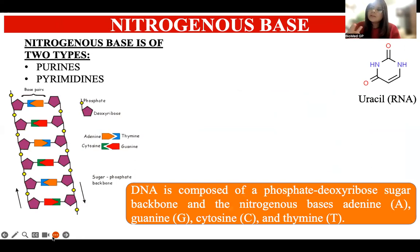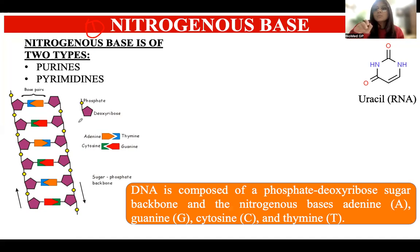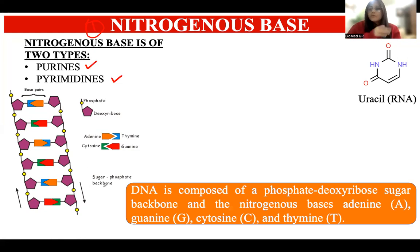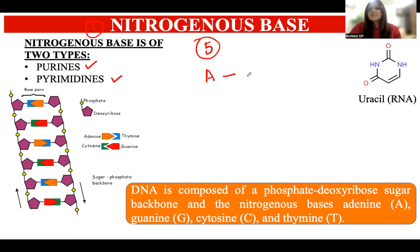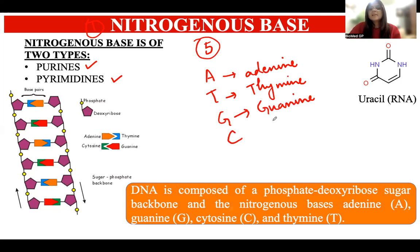Let's look at the three components in detail. First, the nitrogenous base — these are cyclic structures in which nitrogen is present. There are five nitrogenous bases found in nucleic acids in total: adenine (A), thymine (T), guanine (G), cytosine (C), and uracil (U).